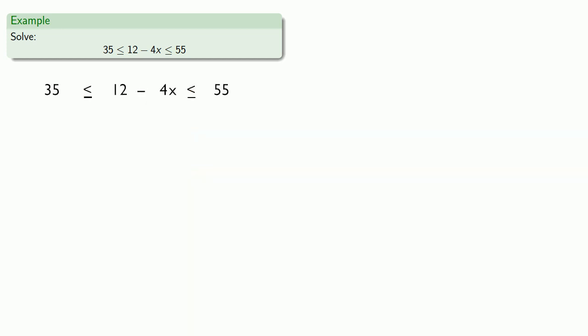Alright, so let's keep the variables in the middle part. The first thing we have to do is subtract 12 from all three sides. Now we do have that coefficient of negative 4, so now we need to divide all three sides by negative 4.